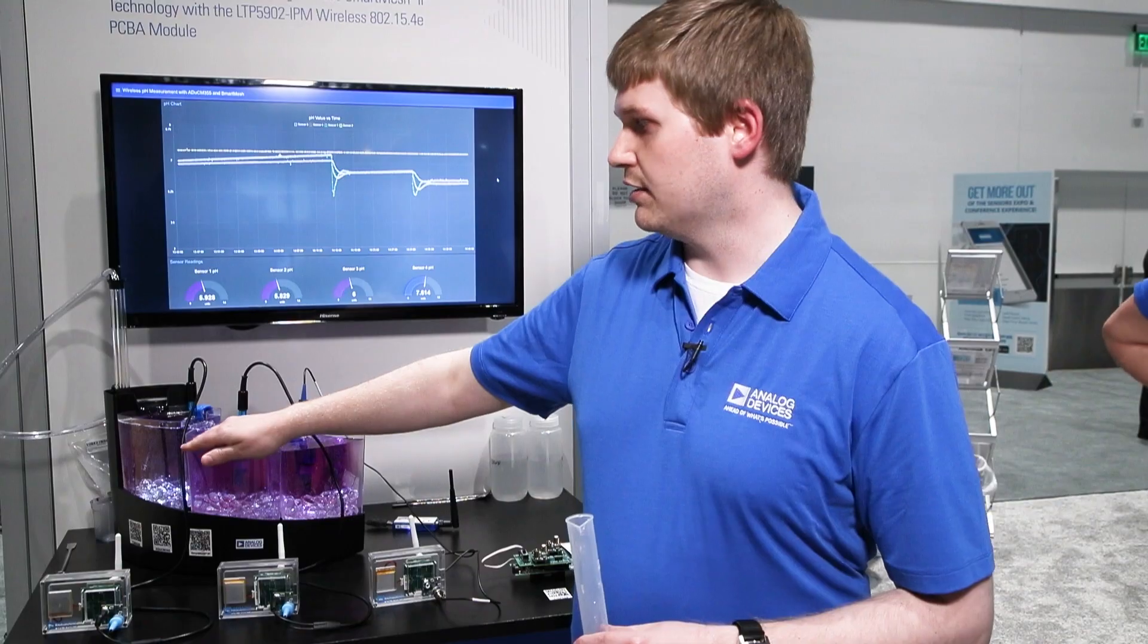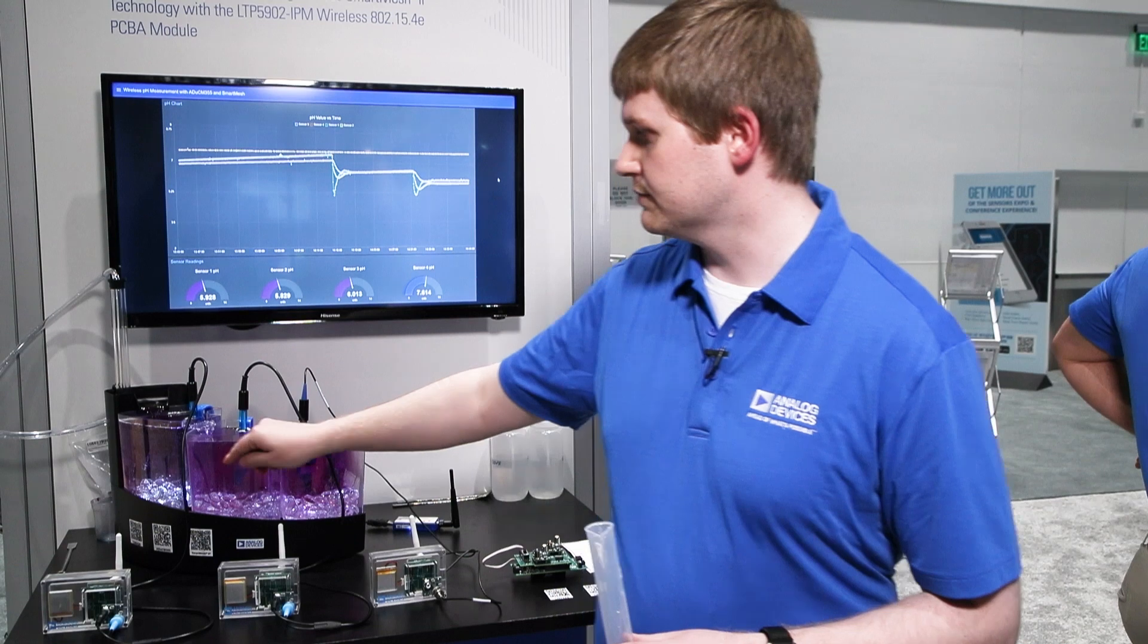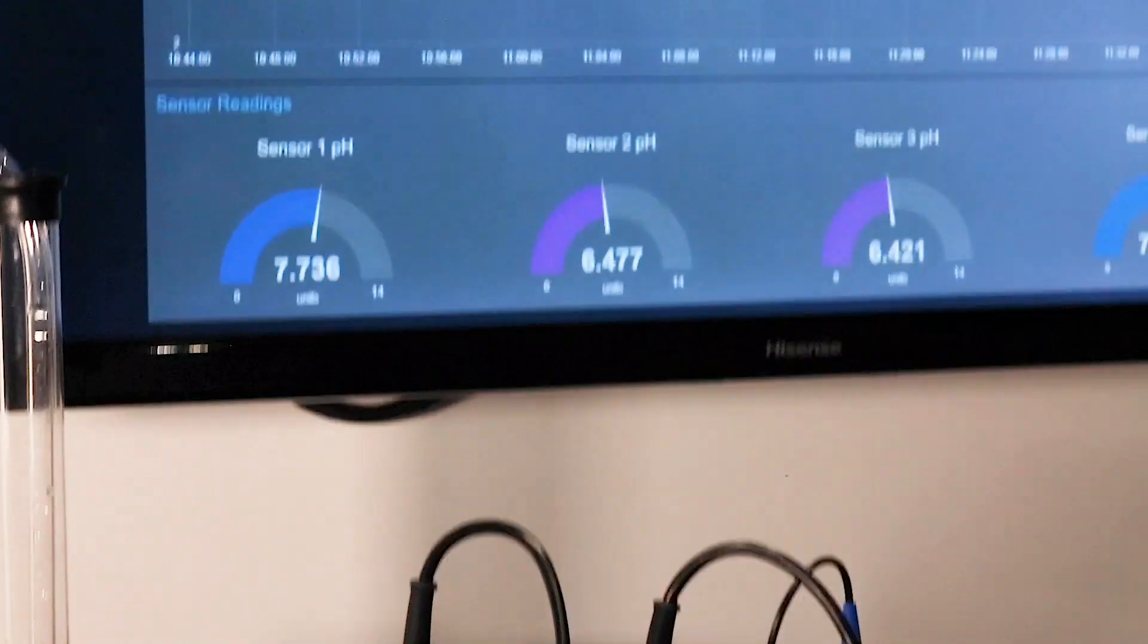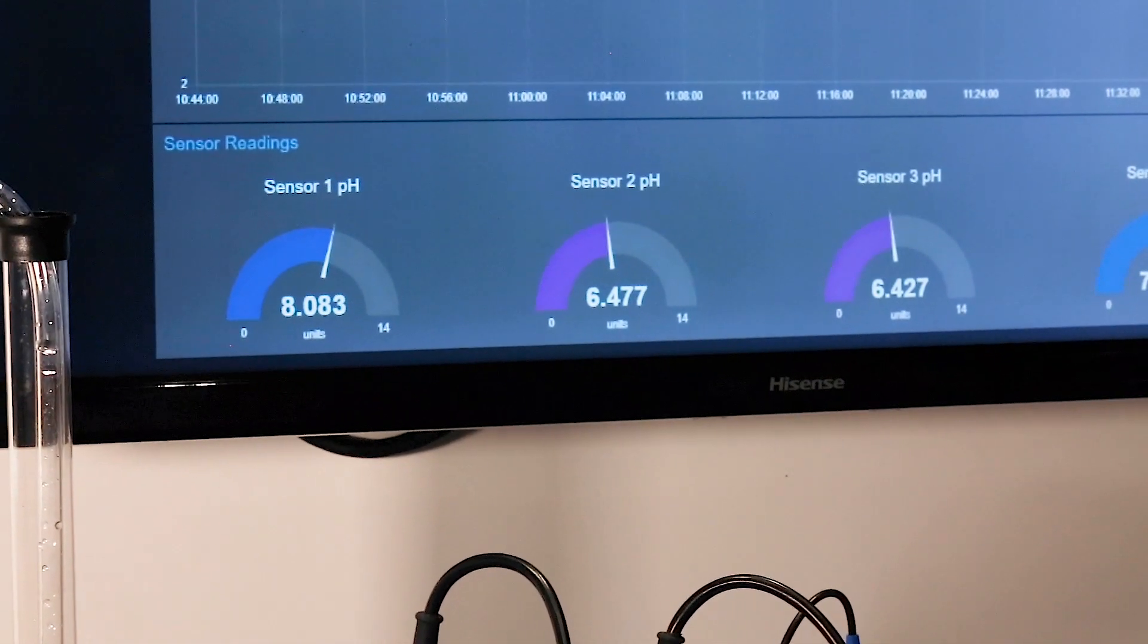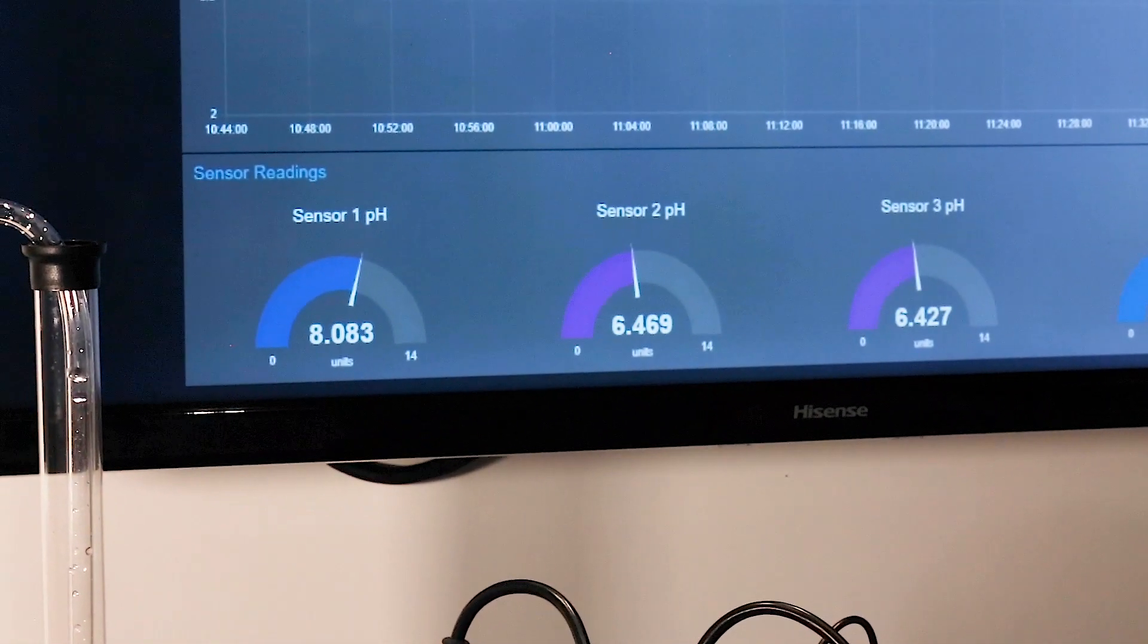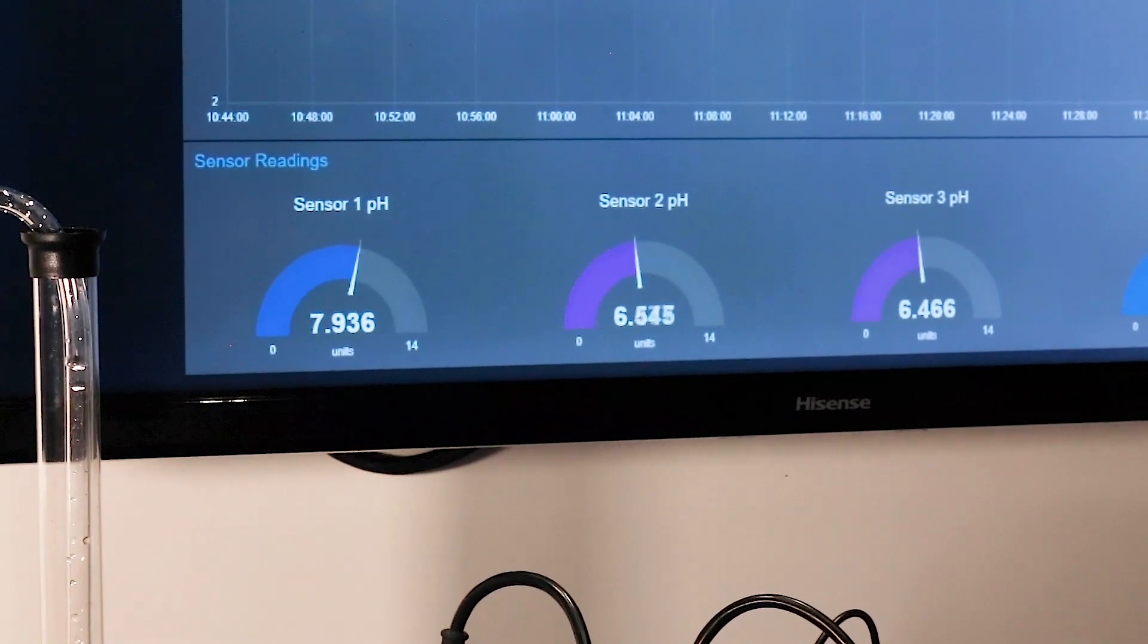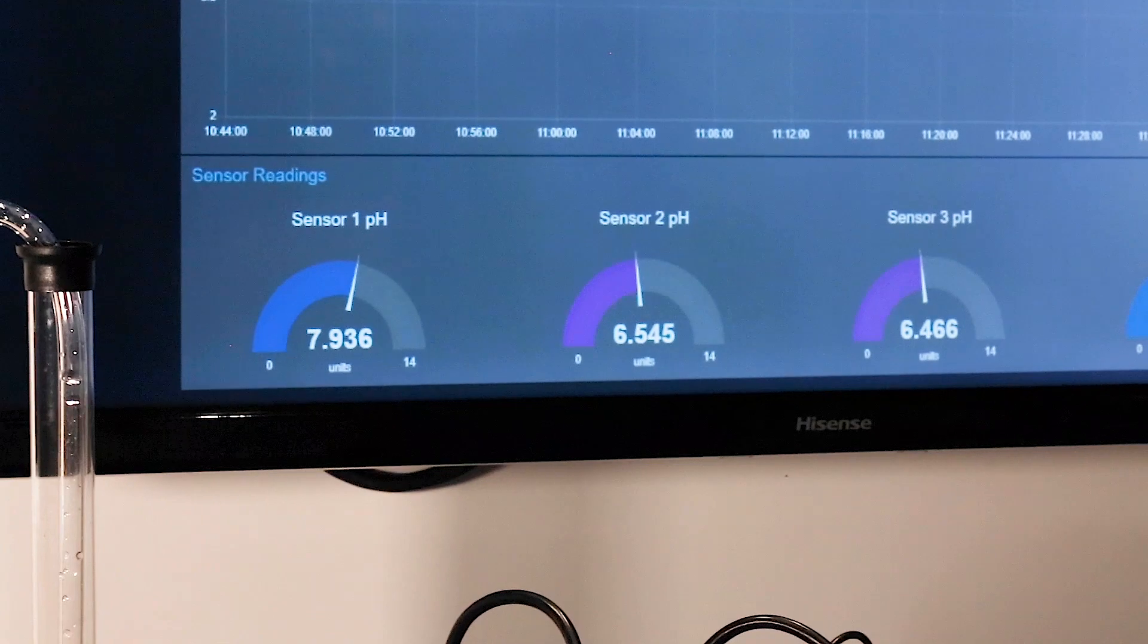As you can see the water in the first tank starts to turn blue and as it propagates and flows from one tank to the next then the color changes in those tanks as well. At the same time you can start to see the sensor measurement change and that correlates to the same pH change that you're seeing by the colors in the tank.